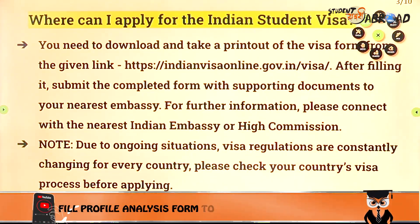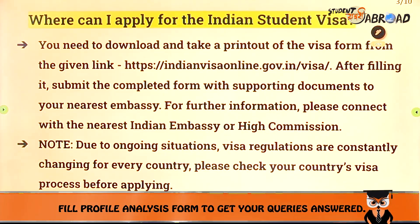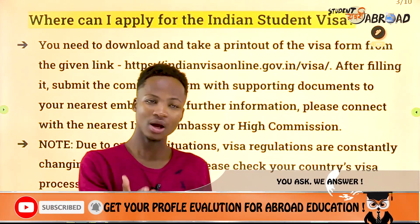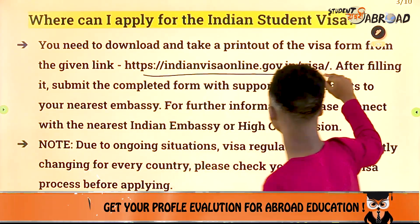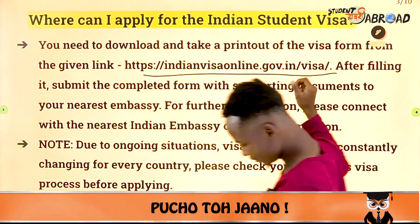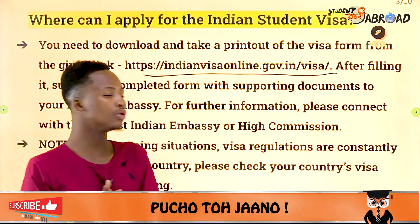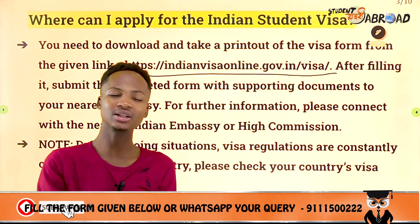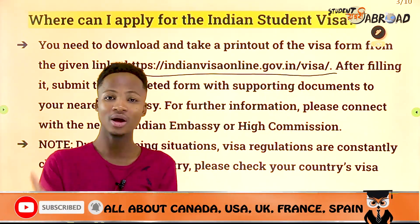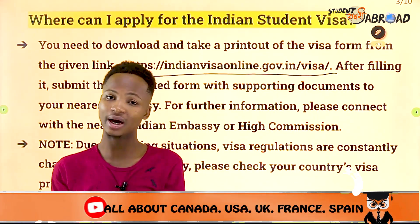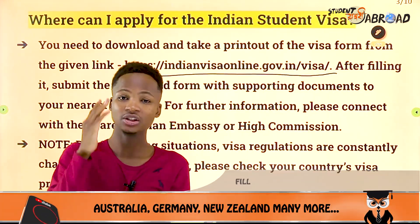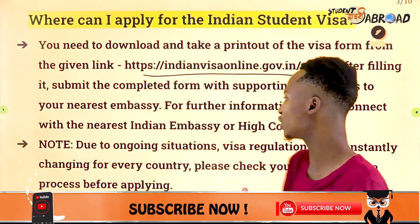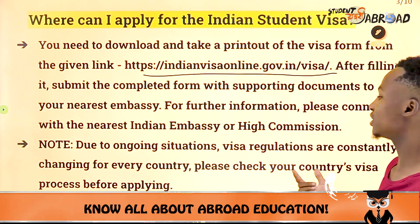The next question is: where can I apply for an Indian student visa? First, you have to fill your application form at the website indianvisaonline.gov.in. Fill all the necessary details like your name, surname, and everything required in the online application form. Third, schedule a meeting at the embassy. Fourth, visit the embassy. Fifth, submit your documents. Sixth, make your visa payment. Seventh, do the interview. Please check your country's visa process before applying as not all countries have the same process.